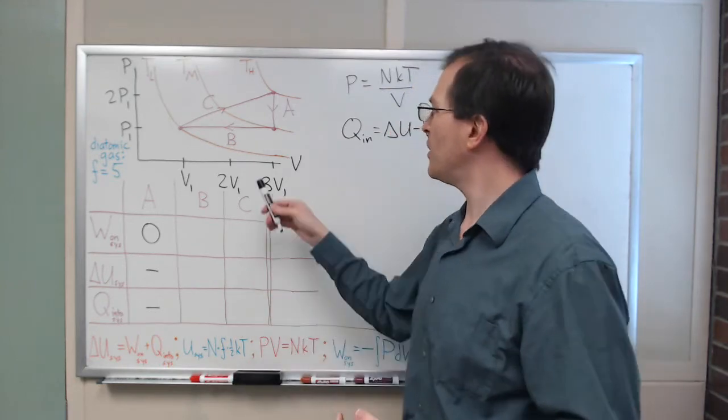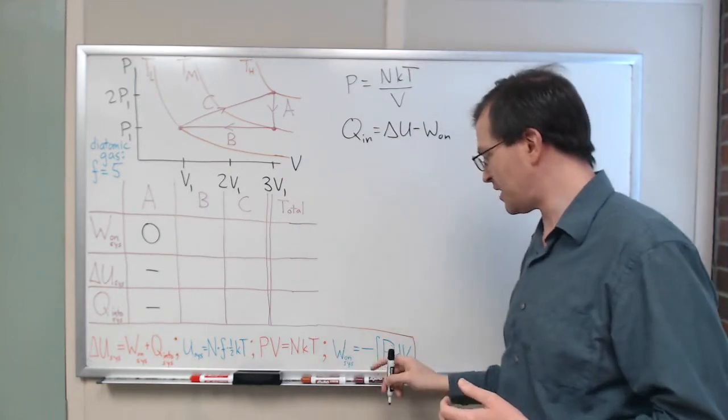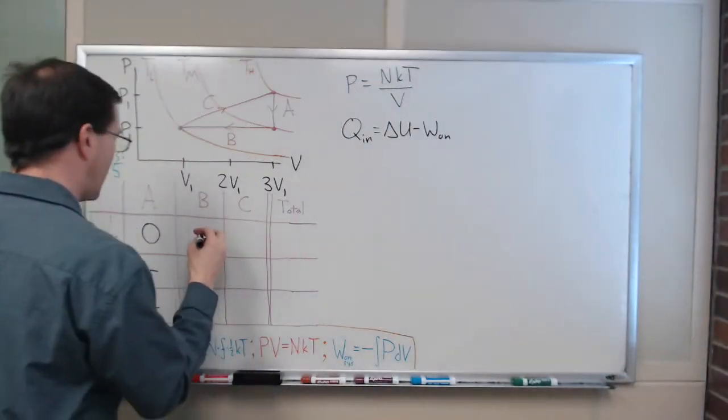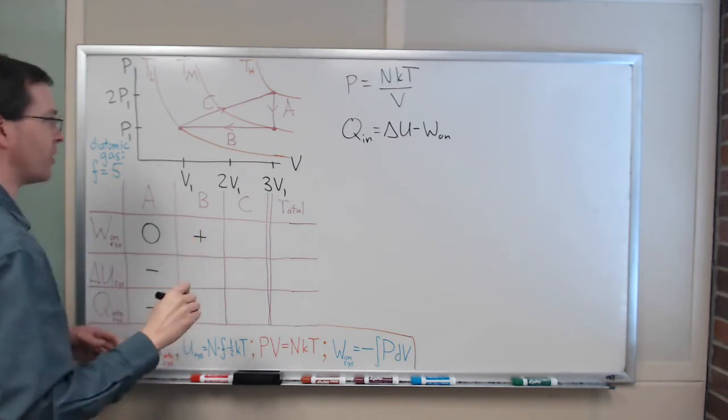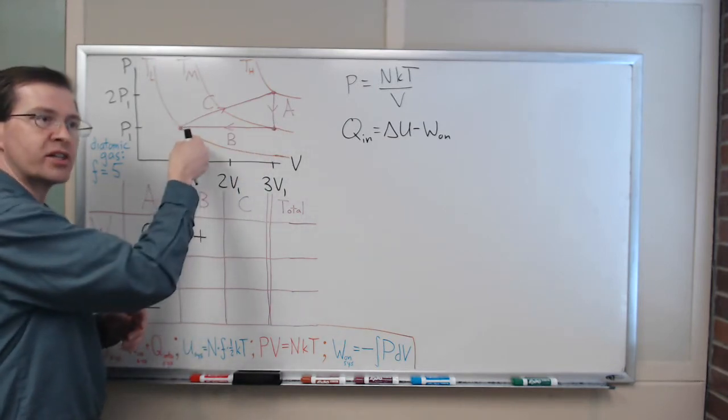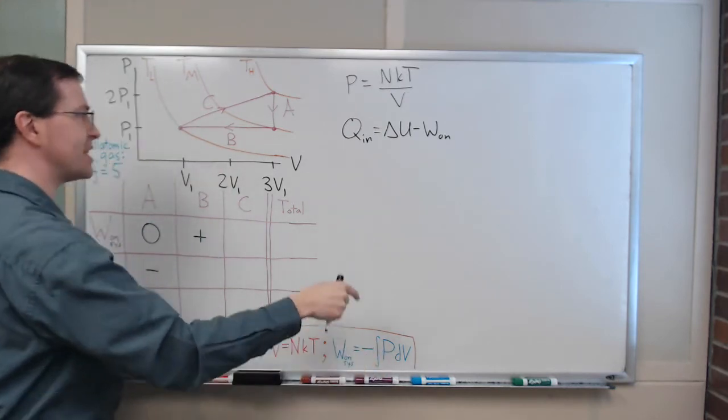And so, we would have the area of this rectangle being a negative number because we're going to the left. And then the minus sign here is what makes it positive. So, sure enough, we get a positive here. It's a negative because the integral is going in the negative V direction. And then the integral is negative, and then the minus sign there brings us to positive.